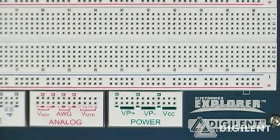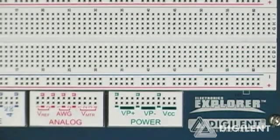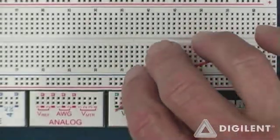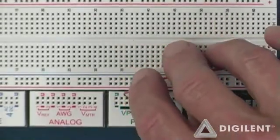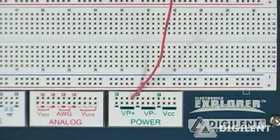Now let's try applying a voltage with the EE board and measuring the voltage that we're applying. I'm going to measure a voltage at Vp-plus first. I'm going to plug in a jumper wire in Vp-plus, another jumper wire in ground.